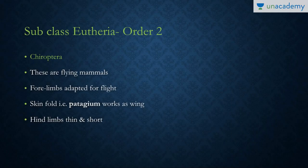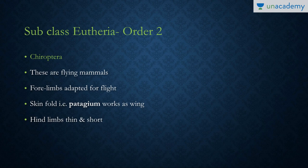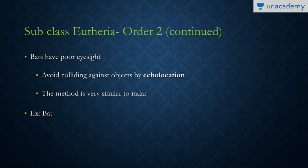The second order is Chiroptera — these are the flying mammals. The forelimbs are adapted for flight. Bats are the best example. There is a skin fold known as the patagium which works as the wing. The hind limbs are thin and short, as they primarily use the forelimbs. They have poor eyesight but avoid colliding with objects by echolocation, which works on the same principle as radar.